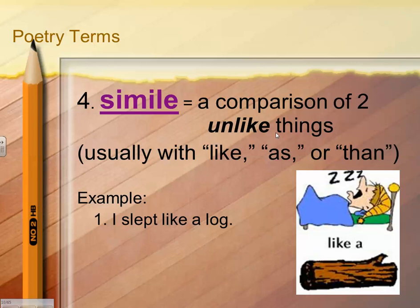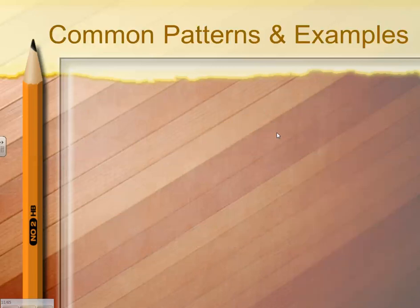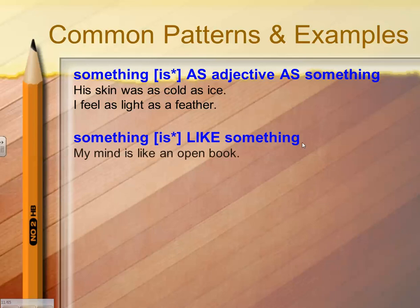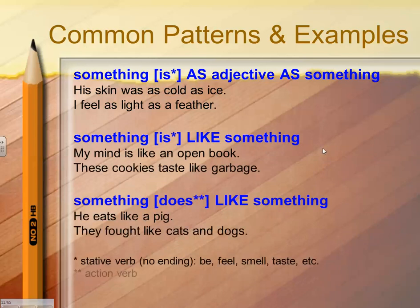A better example would be Usain Bolt ran like the wind. Usain Bolt is a human being, which is nothing like a piece of air, but you're comparing these two unlike things to make a point. Another example: he ran as fast as the wind. You can read all this by pausing the video.